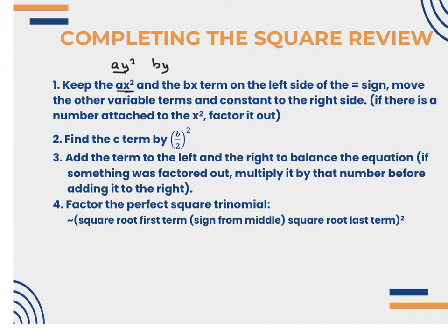Here's where this differs from the video quiz you did on completing the square: previously we never moved the constant to the other side — we just pushed it out, and we added the opposite. Here, we're actually moving the constant to the other side of the equal sign, so this time we're going to add the same number to both sides. Then factor the perfect square trinomial, and divide out so it equals 1.